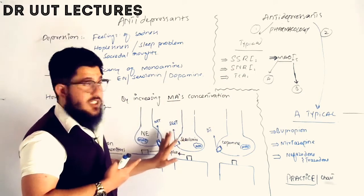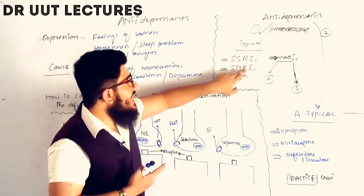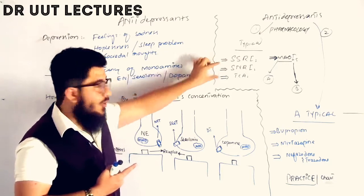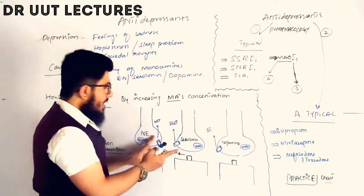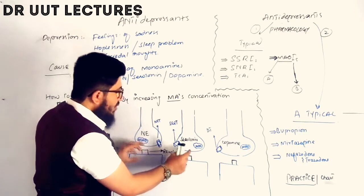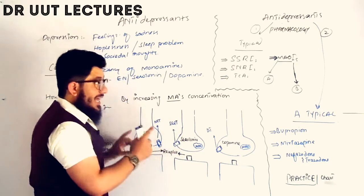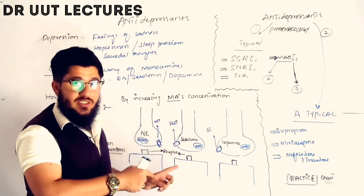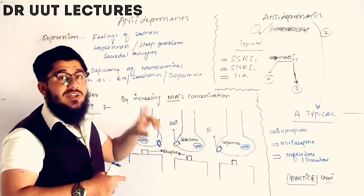Sometimes we need to block both the serotonin and norepinephrine transporters. For that we use SNRIs — Serotonin Norepinephrine Reuptake Inhibitors. These drugs block both transporters, increasing the concentration of both norepinephrine and serotonin in the synapse. By increasing these monoamines, we are countering depression.